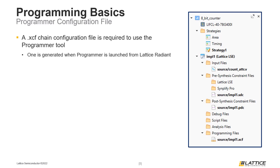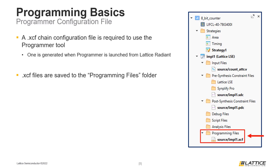If the programmer tool is launched using the standalone version, a chain configuration file will have to be created manually. If users want to open an existing programming session, there are no differences between the built-in and standalone versions, except that users will have to select the file to open if the standalone is used. When a chain configuration file is added to a project, it will appear in the programming files folder of its active implementation. Note that the name of the generated chain configuration file matches the name of the active implementation, as mentioned earlier.